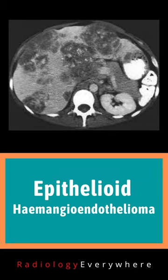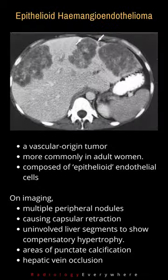In this video, we discuss epithelioid hemangioendothelioma. It is a vascular origin tumor, more commonly seen in adult women. It is composed of epithelioid endothelial cells.